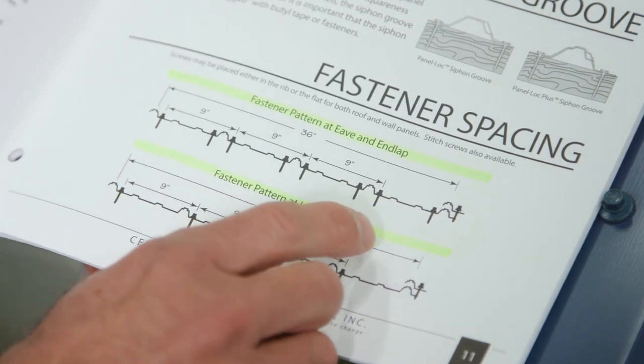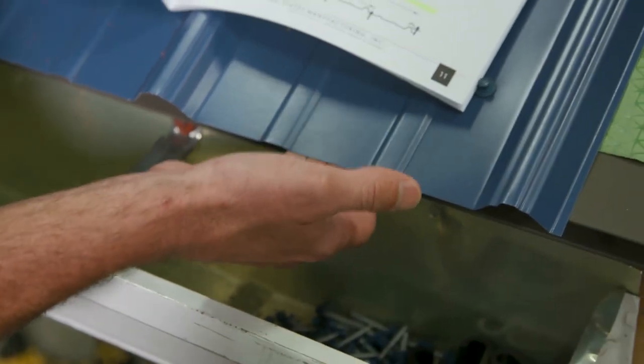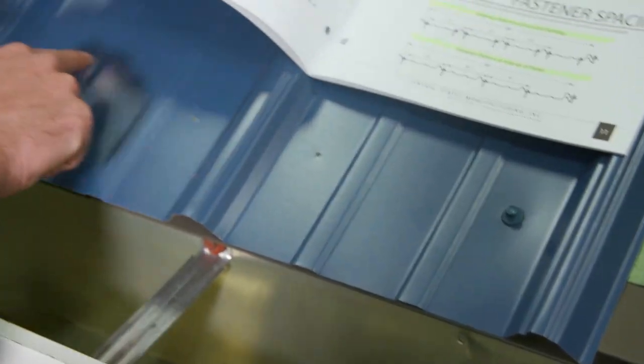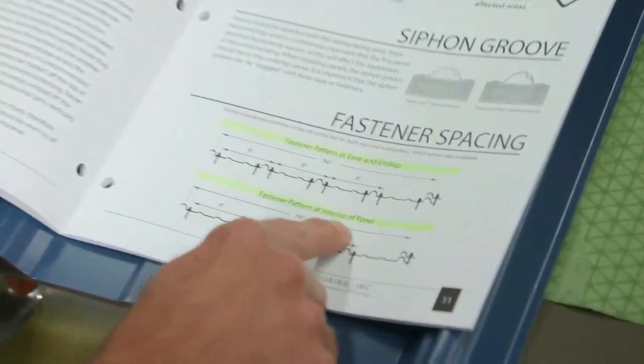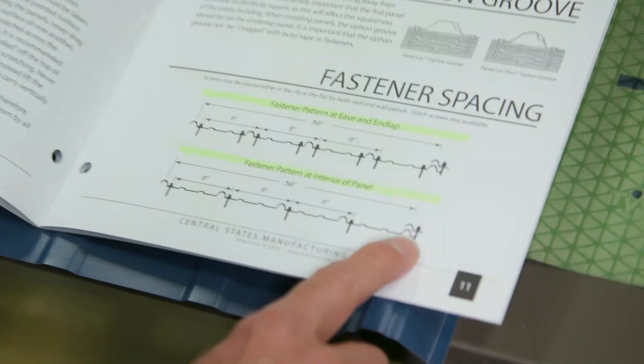Now that's for the eave, and that's because of high wind. You can see here, this is where the wind would come up and it would catch. So they want one actually right beside the ribs all the way across here. And then the fastener pattern at the interior of the panel, that would be up in here. They want you to put one beside every rib in that area.